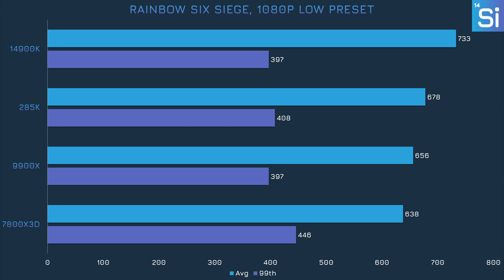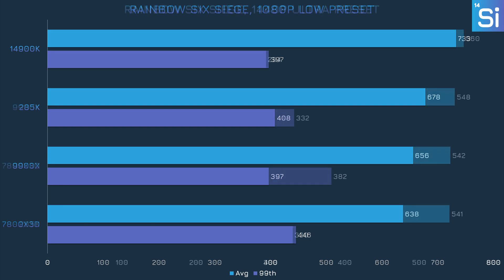The Intel CPUs lead in Rainbow Six Siege, but the 14900K has a clear lead over the 285K. The average frame rates on all CPUs mostly converge with more intense settings, though the 99th percentile frame rates are very different. The 7800X3D has by far the best 99th percentile frame rate, while the 285K and 9900X tied for second, and the 14900K came in last.